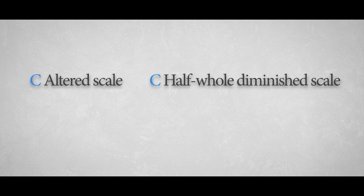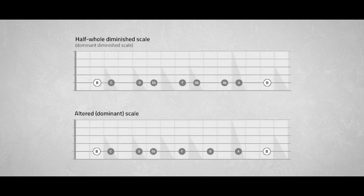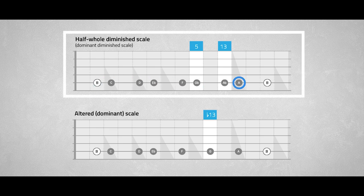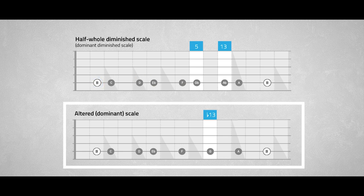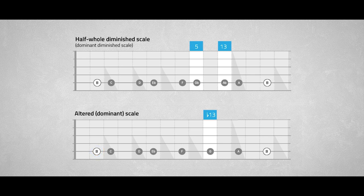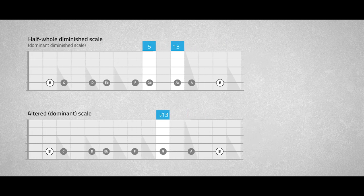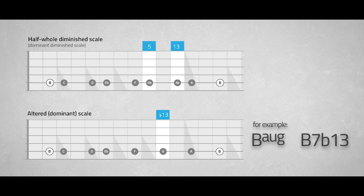Now, both the altered scale and diminished scale are used over dominant chords. The altered scale has only one difference with the half-whole diminished scale, also known as the dominant diminished scale: where the diminished scale has a perfect fifth and a major thirteenth, the altered scale has just a flat thirteenth. The logical consequence is that both scales have different purposes — the altered scale is used for augmented and flat thirteenth chords, whereas the diminished scale is used for dominant thirteenth chords.